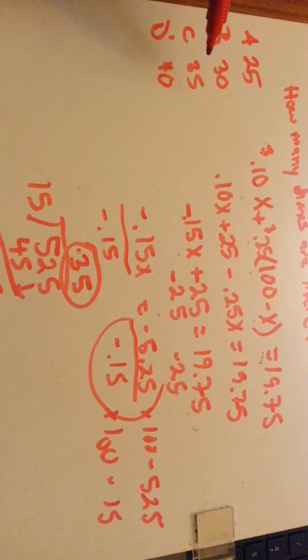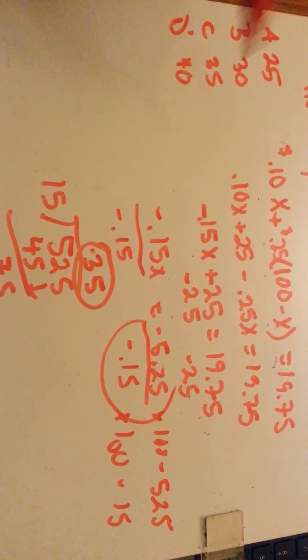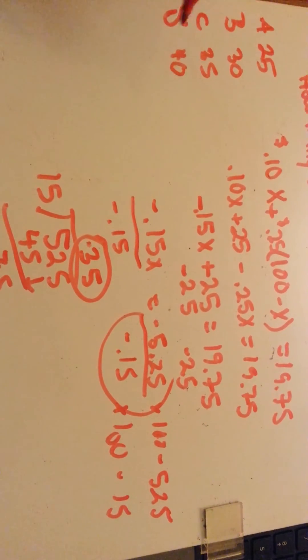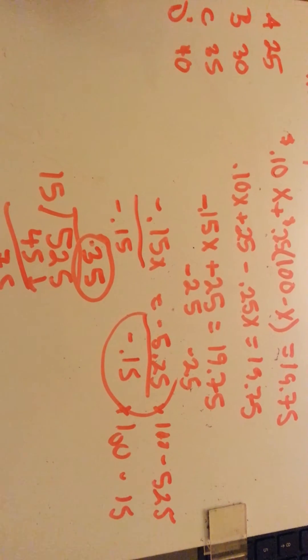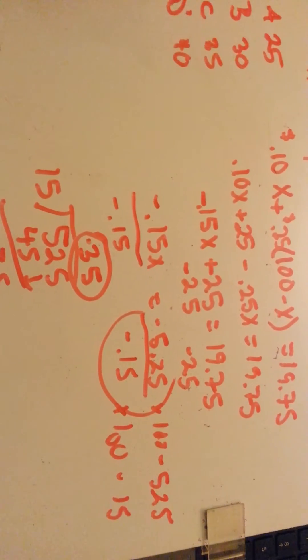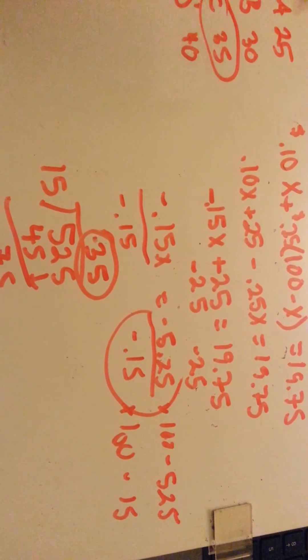In the problem, 35 dimes to 65 quarters. Answer C. Thank you.